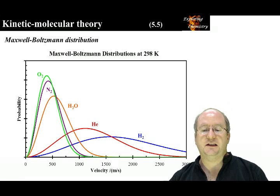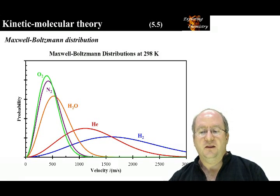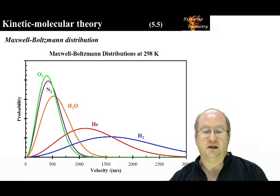This is the velocity distribution of different molecules at 298 Kelvin. They all have the same energy distribution because they are at the same temperature, but have different velocity distributions because of their different masses. It is evident that lighter molecules have a higher velocity than heavier molecules.